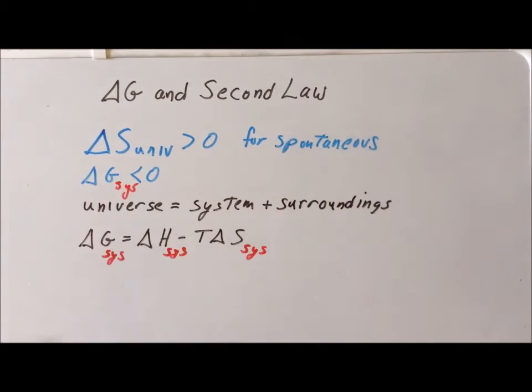And I assert that these two formulations, the delta S of the universe being greater than zero, and delta G of the system being less than zero, for a spontaneous process, are merely restatements of exactly the same fact.